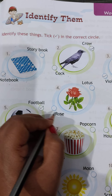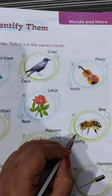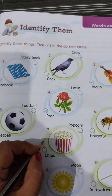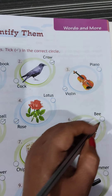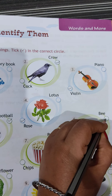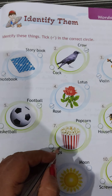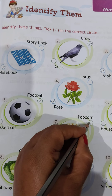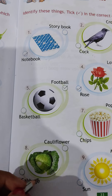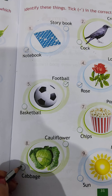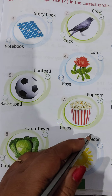You can see the image of a flower — it's a beautiful red flower. The name of this flower is rose. Number six, you have seen this — it is popcorn. You all love to eat popcorn, so the answer is popcorn.